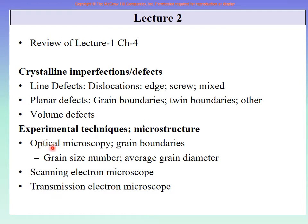Under experimental techniques, we will cover optical microscopy to look at grain boundaries, which means we will discuss grain size number and average grain diameter. Then we will look at higher-level microscopes — the scanning electron microscope and transmission electron microscope. We don't know how much of this we will actually cover, but this is our ambitious target for today.